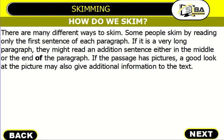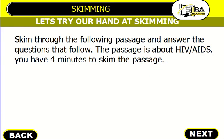So how do we skim? There are many different ways. Some people skim by reading only the first sentence of each paragraph. If it's a long paragraph, they might read an additional sentence — either in the middle or at the end of the paragraph. If the passage has pictures, a good look at those pictures may also give additional information about the text. If there's a map attached to the passage, the map will also give you additional information. So in other words, you just look at the first sentence of each paragraph, but if it is long you might read the next or last sentence to get a rough idea of what the article is about.